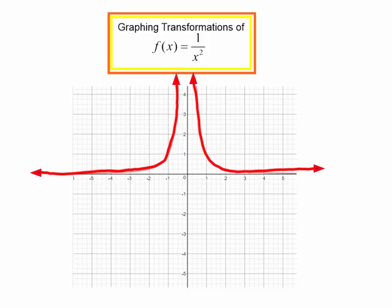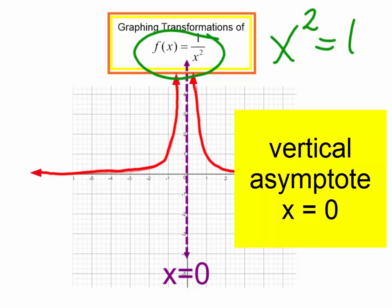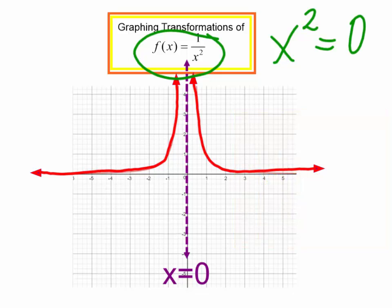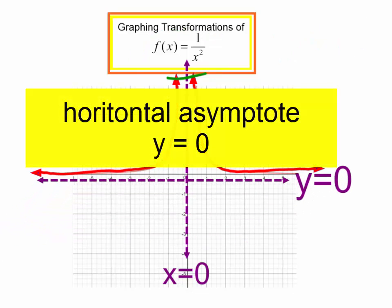It has similar asymptotes. We have a vertical asymptote at x equals 0. But if you look at this graph, when is that undefined? Remember how we found our vertical asymptote in a previous video? When does that denominator equal 0? Well, it's when x is 0. And we still have our horizontal asymptote at y equals 0.